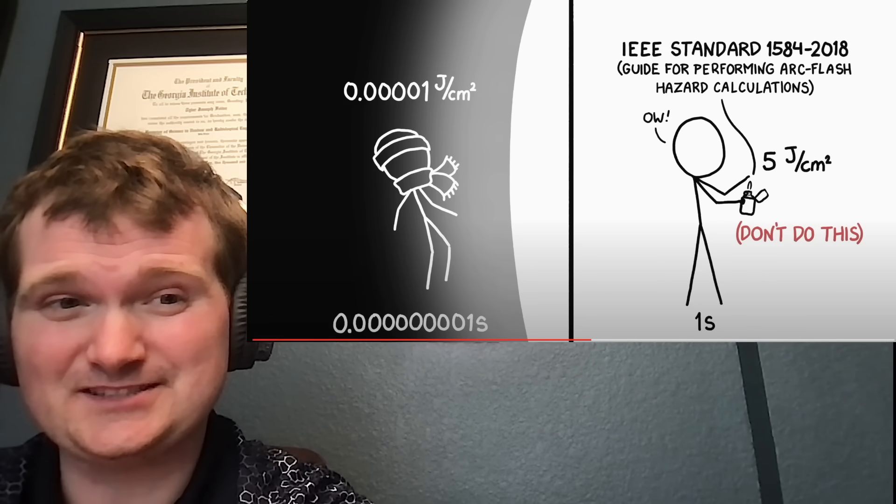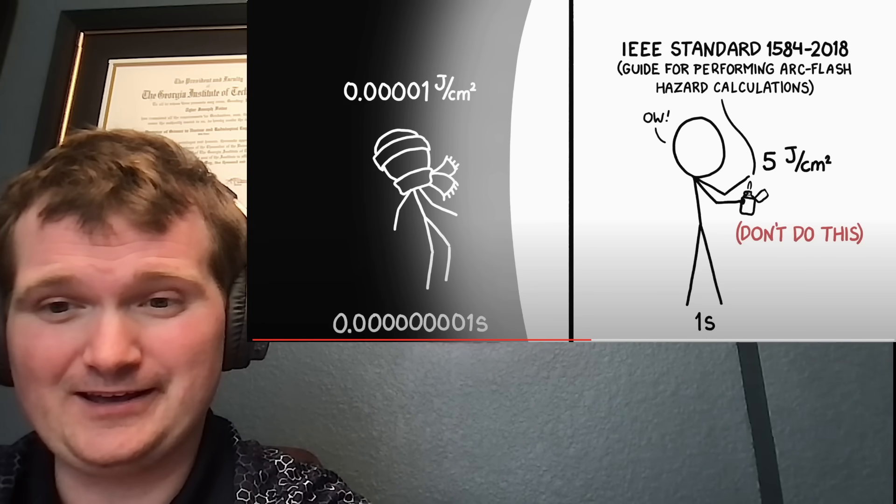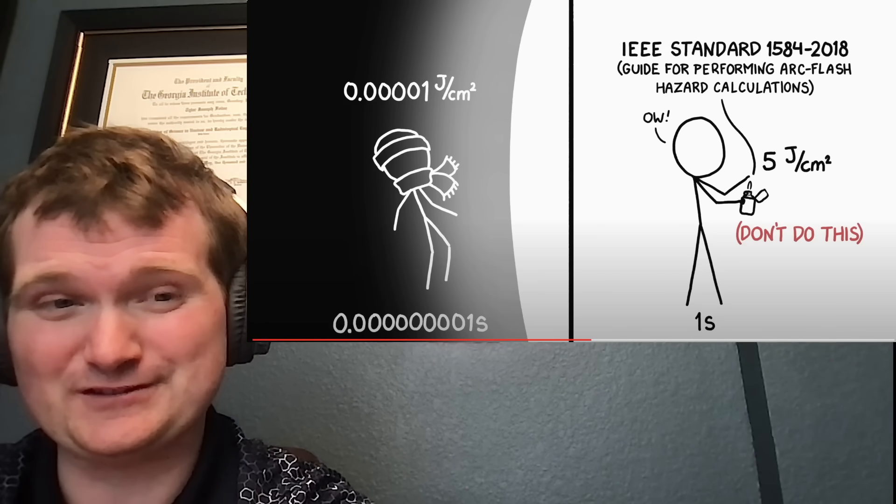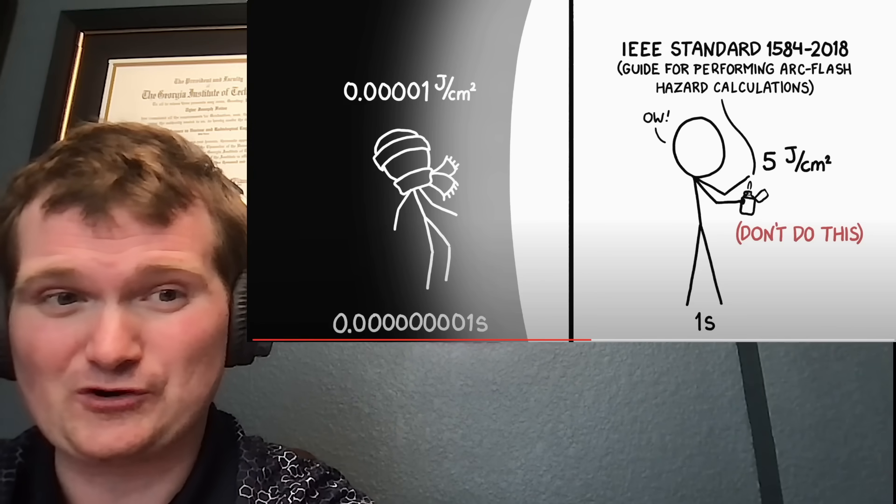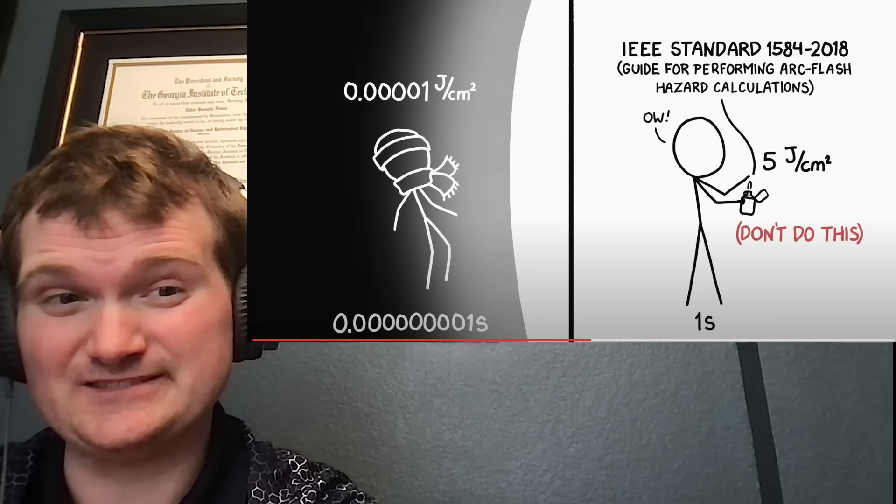I mentioned second-degree burns. Those calculations that are done and recommend what sort of PPE you have, the threshold they look at is second-degree burns, not first-degree burns. So, even if you have a sufficient arc rating on your flash gear, it doesn't mean you're not going to get burned. It just means you're going to live. So, other than the dim flash in your eyes, you might not even notice.